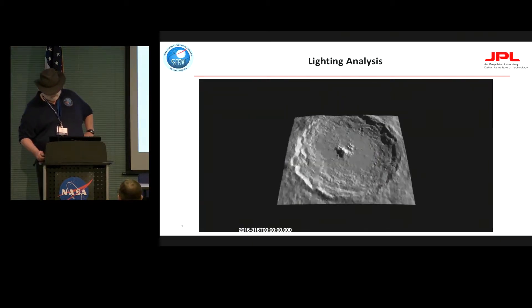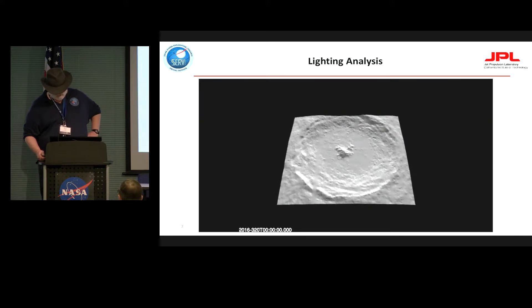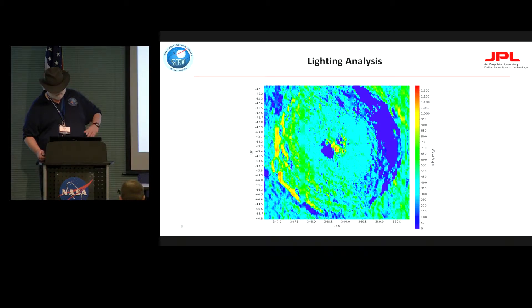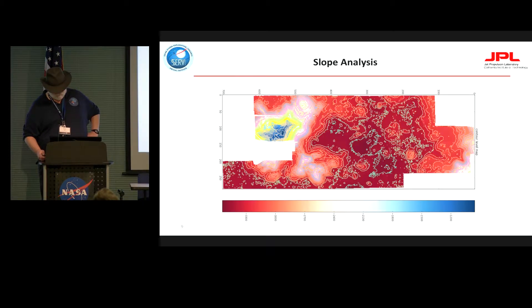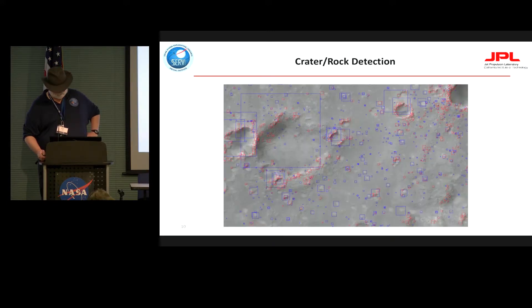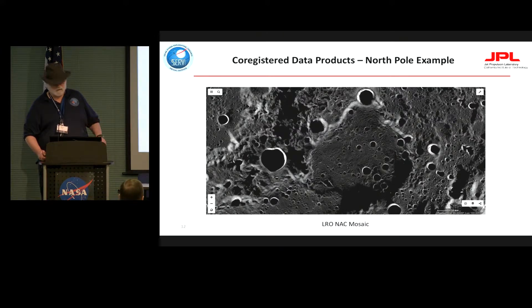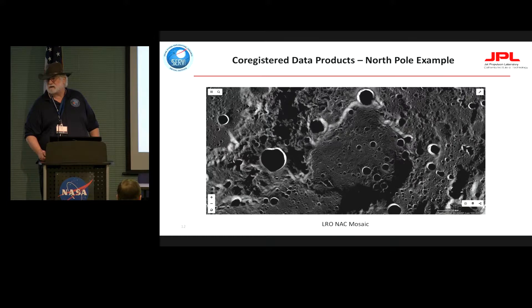A suite of more advanced tools includes lighting analysis, which also provides watts per square meter mapping, customizable slope analyses, and computer learning-based crater and rock detection and distribution. The real heart of the portal is based on, in the case of the Moon, roughly 1,000 different data layers that are geo-referenced and co-registered.